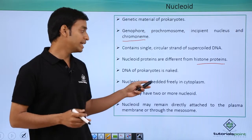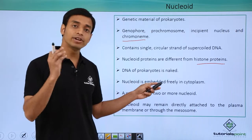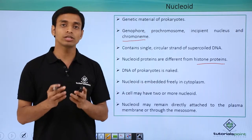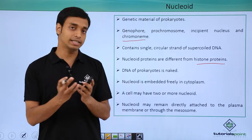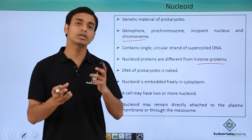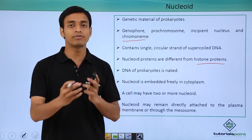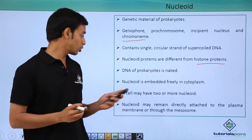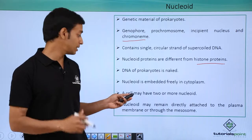The nucleoid is embedded freely in the cytoplasm. The nucleoid does not acquire any specific position, so it is present freely in the cytoplasm of the bacterial cells.